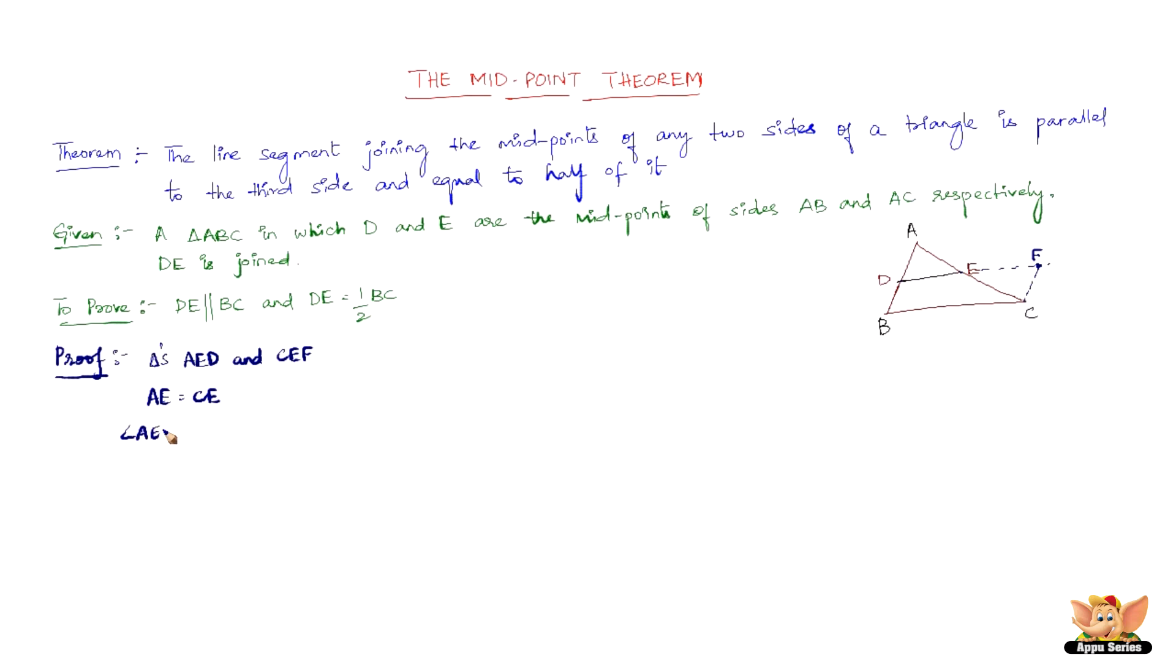And we also have angle AED equals angle CEF. These two angles are equal because vertically opposite angles. And we have DE equal to EF because that is what we constructed. We constructed in such a way that EF is equal to DE. So that is from construction.